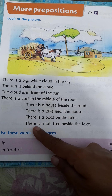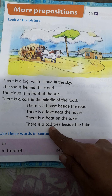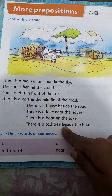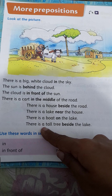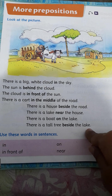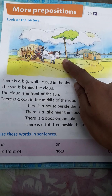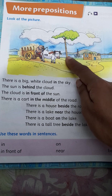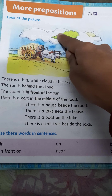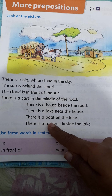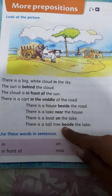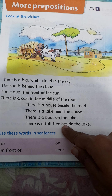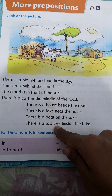T-H-E-R-E there, I-S is, a T-A-L-L tall, T-R-E-E tree, B-E-S-I-D-E beside, T-H-E the, L-A-K-E lake. There is a tall tree beside the lake. Beside means bagal mein. Tall means lamba, tree means peed, lake means jheel. Jheel ke bagal mein ek lamba peed hai.